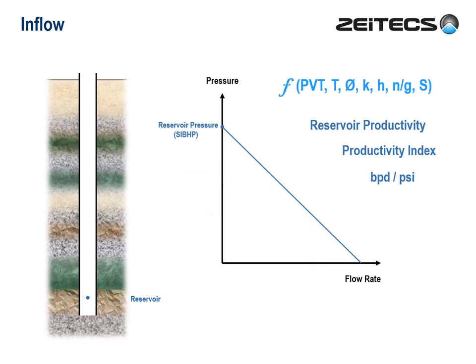I should admit to oversimplifying things just a bit, because when the ambient pressure is reduced to below the so-called bubble-point pressure of the fluid, then liquids and gases separate and they have their own lines. A chap called Vogel had a lot to say about this back in the 60s. But I think you get the message.